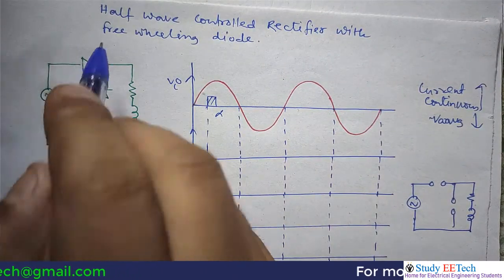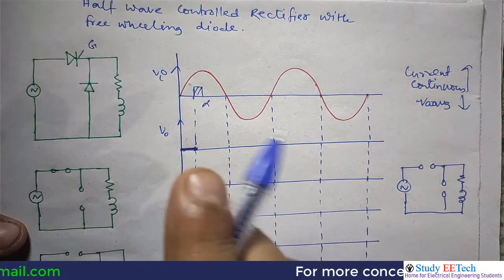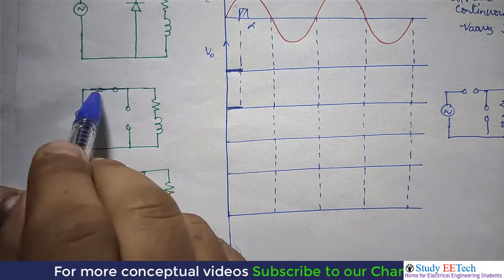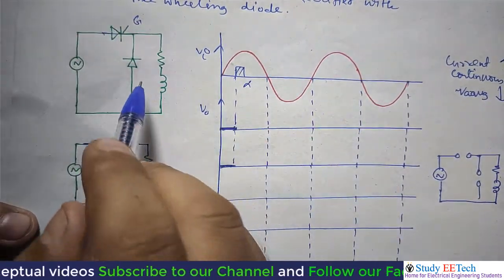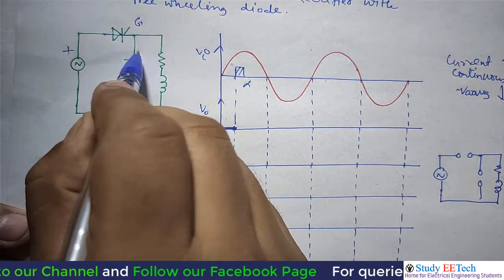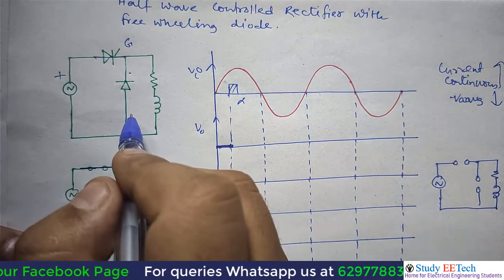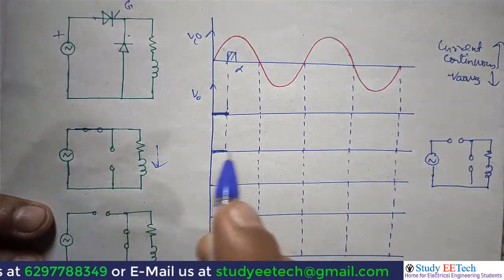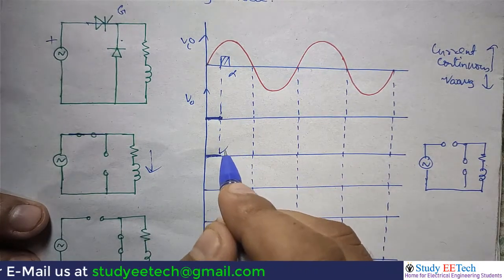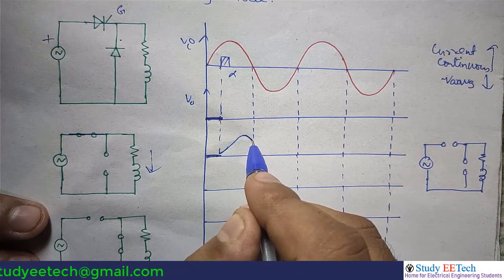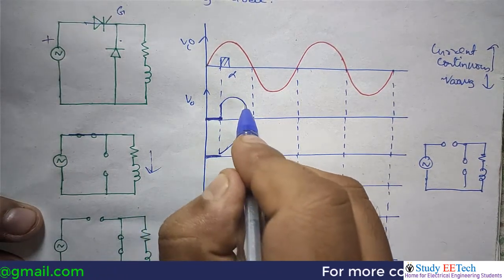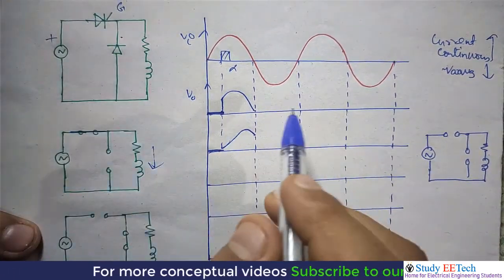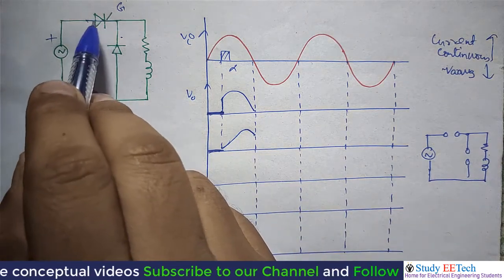At angle alpha, we suddenly trigger the thyristor through its gate terminal. The thyristor turns on, forming a closed path. The freewheeling diode becomes reverse biased because positive voltage appears at its anode-side and negative at its cathode. Current through the inductive load rises, reaches a maximum, then decreases. At point pi, the current is not yet zero, so the thyristor will not turn off.